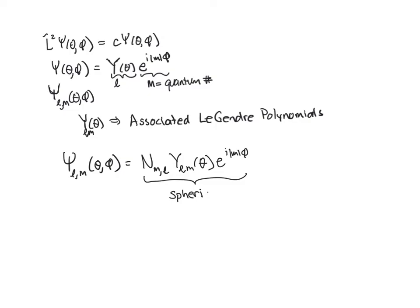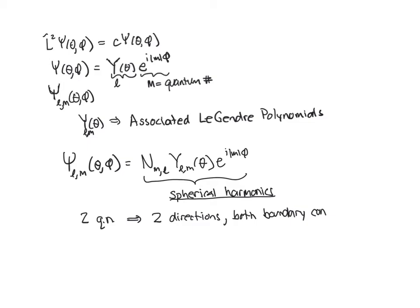This whole thing put together is called spherical harmonics. These spherical harmonics are functions that we can look up that solve this equation. Notice that we have two quantum numbers because we have two directions, and both directions have boundary conditions. So we had to throw out wave functions that didn't fit those boundary conditions, leaving us with only certain solutions. Therefore the solutions are quantized, because only the physically acceptable wave functions will solve the problem, giving us only particular wave functions and particular energies.